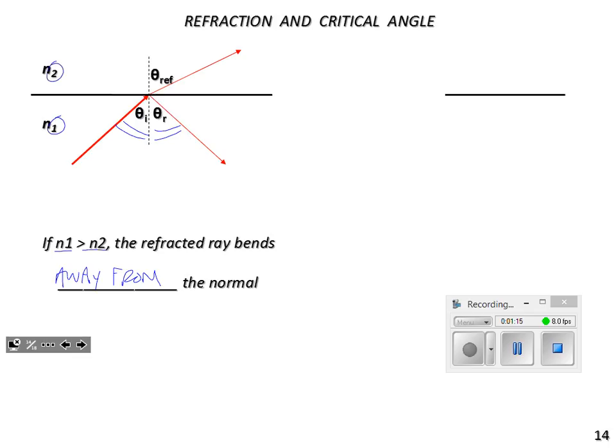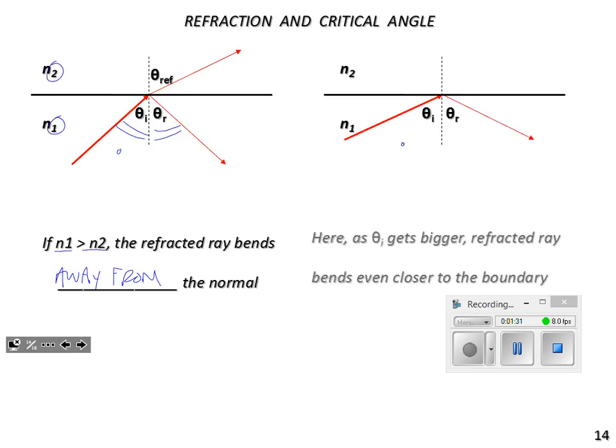Let's take that incident angle and make it bigger. Our reflected angle gets bigger, of course it does. Our refracted ray does something like that. As the incident angle gets bigger, the refracted angle gets bigger as well, gets closer to the boundary.